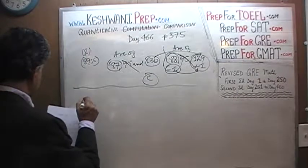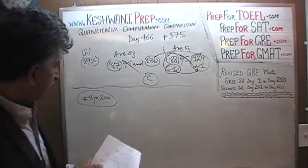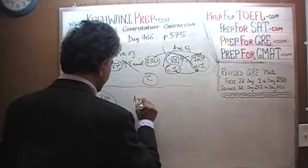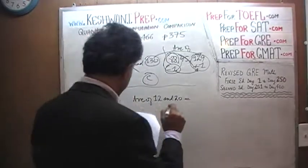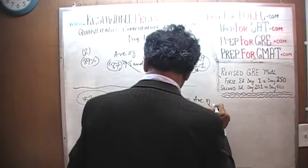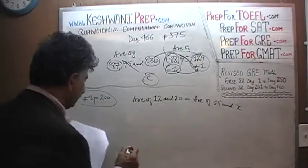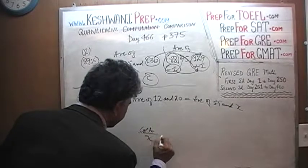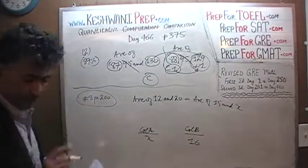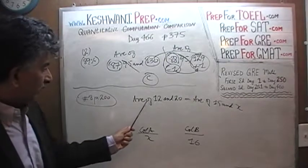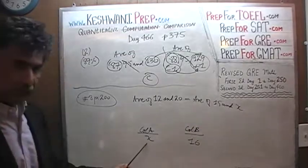Let's do one more — a similar problem. This is number 8, appearing on page 200. We are told that the average of 12 and 20 is equal to the average of 15 and X. What we are being asked to compare is: in column A, X; in column B, 16. Average of 12 and 20 equals average of 15 and X — how does X compare to 16? I'll give you 5 seconds to pause and unpause the video.